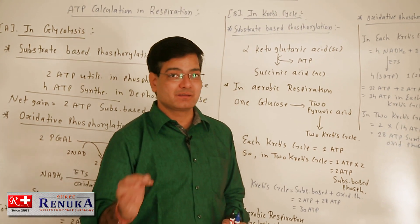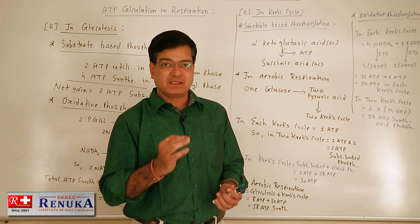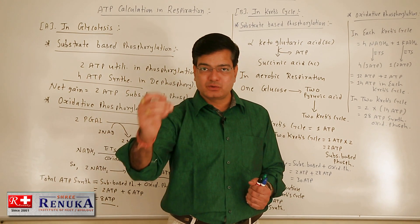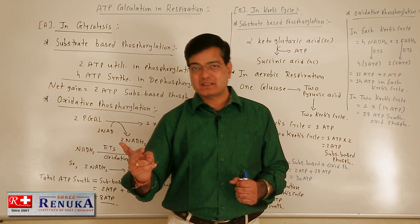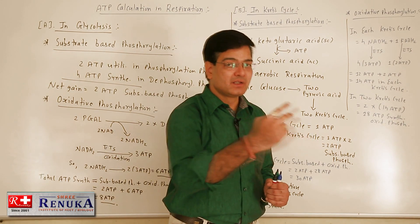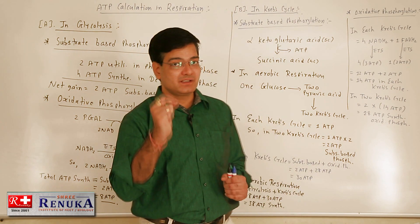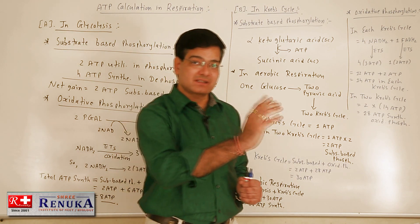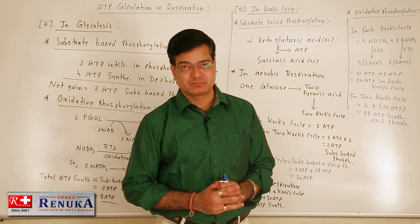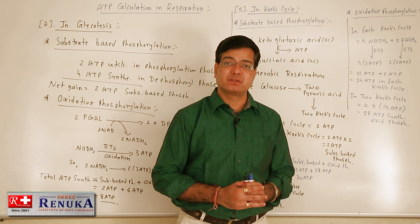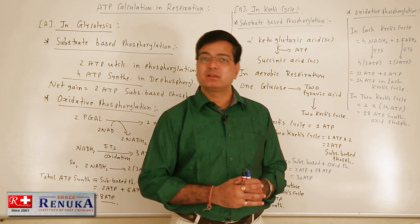In aerobic respiration, 38 ATP are synthesized, but in eukaryotic organisms we get only 36 ATP. When 2 pyruvic acid molecules convert into 2 acetyl coenzyme A and enter the mitochondrial matrix, 2 ATP are consumed during this process. So we deduct these 2 ATP, giving only 36 ATP in aerobic respiration. The efficiency of aerobic respiration is 45% only — 55% of energy is released or lost as heat energy.